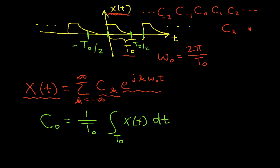This gives us c0, the coefficient for k is equal to 0. And c0 is sort of a special case in the sense that it is the average value of the signal over one period. When you get further into Fourier analysis, you'll oftentimes see c0 as the DC component of your signal.